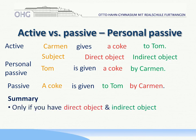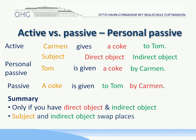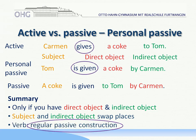To summarize: personal passive only works if you have a direct object and an indirect object. An indirect object you only have if there is also a direct object. The subject and the indirect object swap places, and the verb has its regular passive construction — from 'gives' to 'is given'.